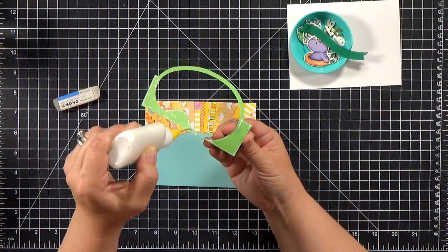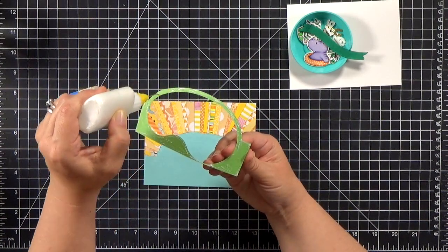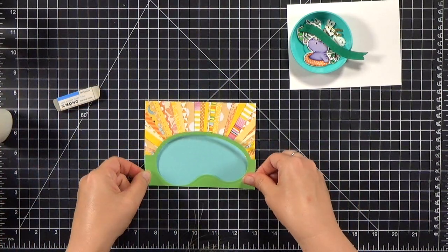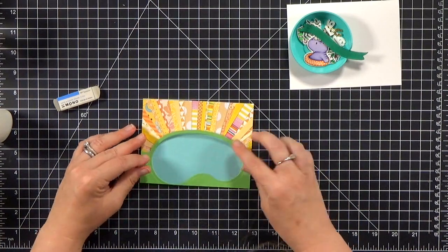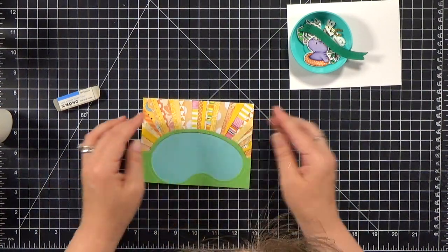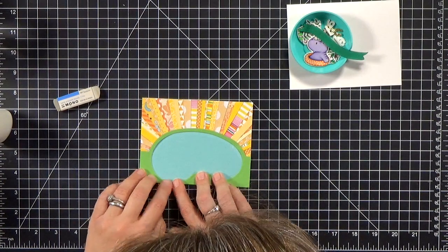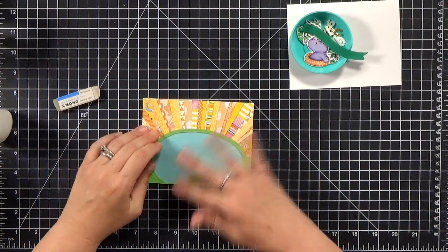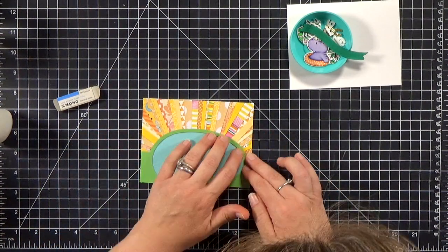I do like wet glue, especially for things like this where I may need to shift it around a little bit. So you can see as I push this down, I'm making sure to really push down along the edges of those rays. And get it stuck down really nice. And if any glue seeps out, I'll clean that up.